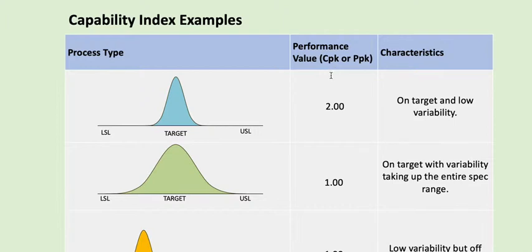Here we have an example of a process type. Let's say this is a generalized distribution of some output. You can see that it's pretty well centered on target. This would garner a Cpk of 2, and the characteristic here is on target and low variability.